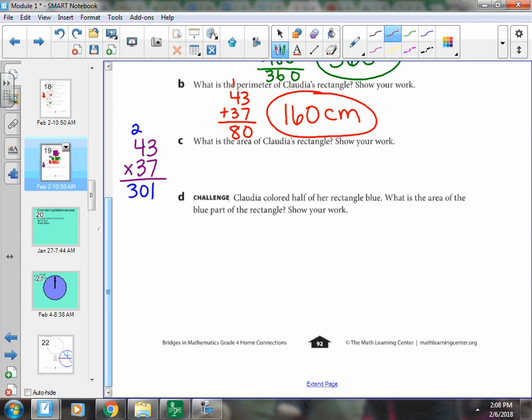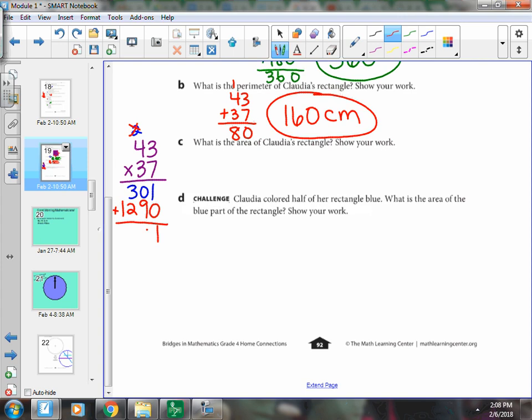Now we're going to multiply with our 3, which is really in the tens place. 3 times 3 is 9. 3 times 4 is 12. Add the two together.